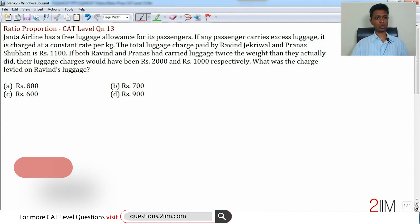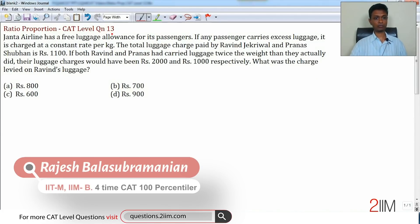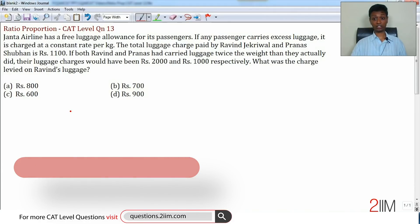Let's solve this ratio and proportion CAT level question number 13. Janta Airline has a free luggage allowance for its passengers. If any passenger carries excess luggage, it is charged at a constant rate per kilogram.